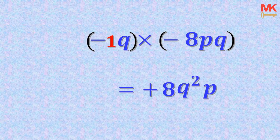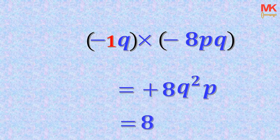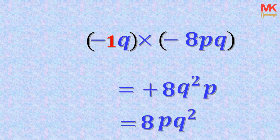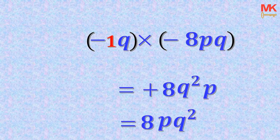The alphabets or variables must be written in alphabetical order. We rearrange so that P comes before Q, giving us positive 8PQ squared. We neglect the positive operation because it is irrelevant — a number without an operation has an invisible positive operation. Since the term is single, we remove the plus sign, and the final answer becomes 8PQ squared.